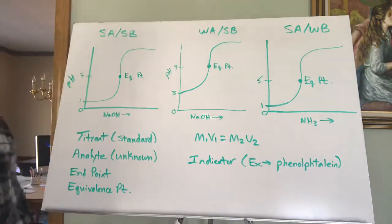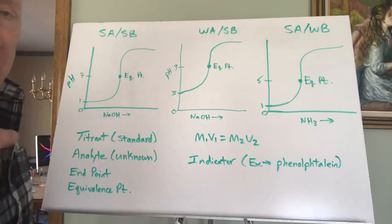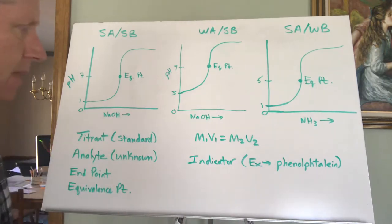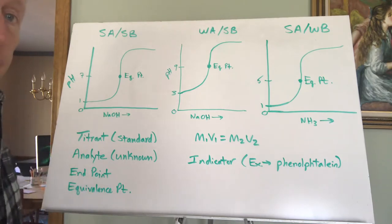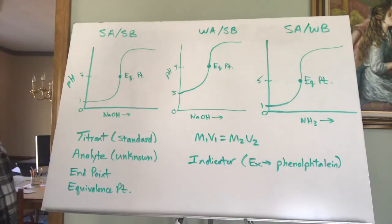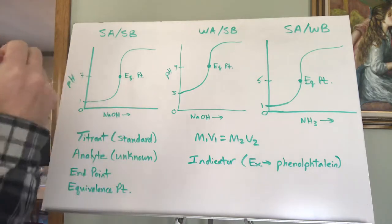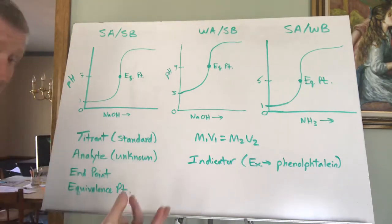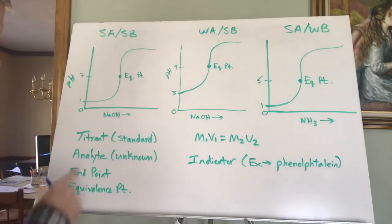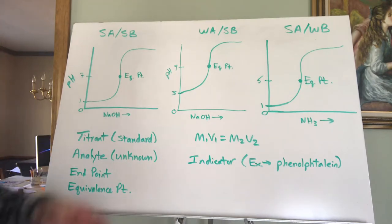Titration is what's called a volumetric analysis — that means you analyze something using volumes of solutions, usually acid-base solutions. This week's lab will deal with a volumetric analysis of an unknown base concentration with a known acid. The concentration of the solution you know is called your standard solution or titrant. The titrant is what you put in the burette. The analyte — what you're trying to find out the concentration of — is the unknown, and that goes in an Erlenmeyer flask.